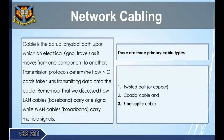Cable is the actual physical medium upon which an electric signal travels as it moves from one component to another. Transmission protocols determine how NIC cards take turns transmitting data onto the cable. LAN cables are baseband, carrying one signal, while WAN cables broadband carry multiple signals. There are three primary cable types: (1) twisted pair or copper, (2) coaxial cable, and (3) fiber optic cable.